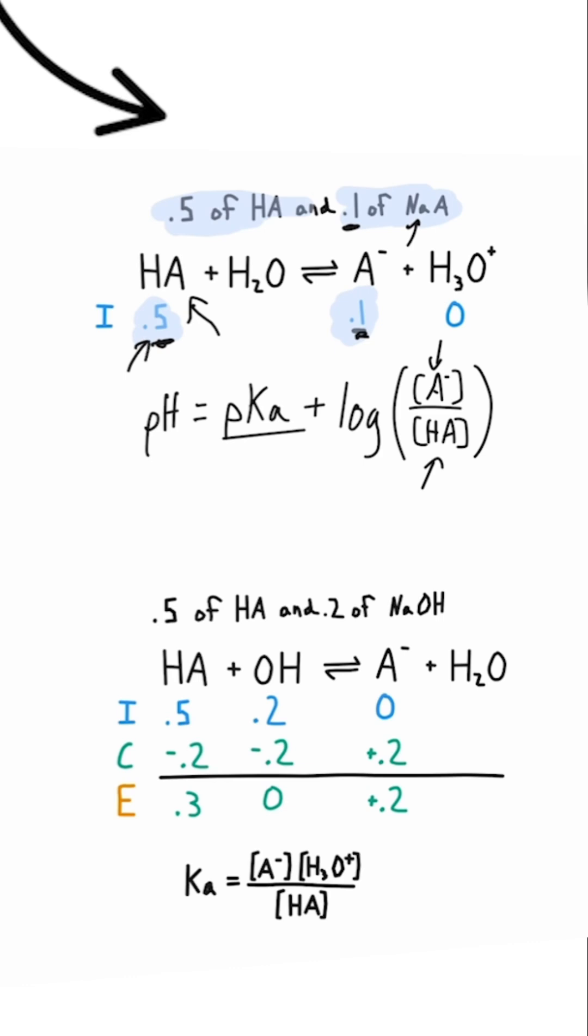And just in case you're wondering, the 0.5 value and the 0.1 value won't change much because this is a weak acid and a weak base, so they barely react. And that's why we can plug both of those values into the Henderson-Hasselbalch equation.